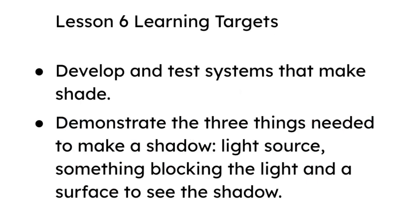By the end of this lesson, students will have developed and tested systems that make shade, and demonstrated three things needed to make a shadow: a light source, something blocking the light, and a surface to see the shadow. In Lesson 7, students will apply what they've learned throughout the unit to develop and test shade solutions to keep cool on the playground.